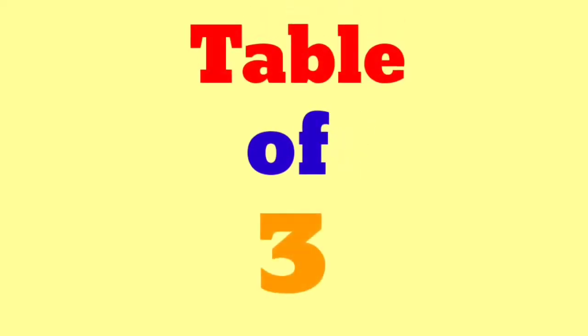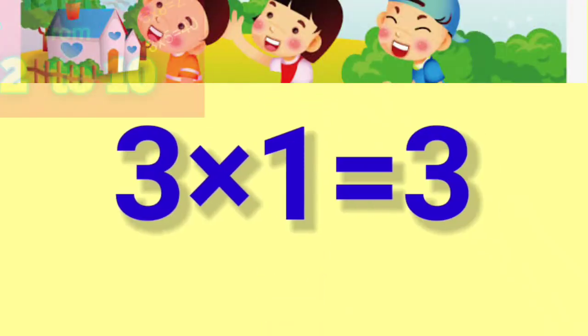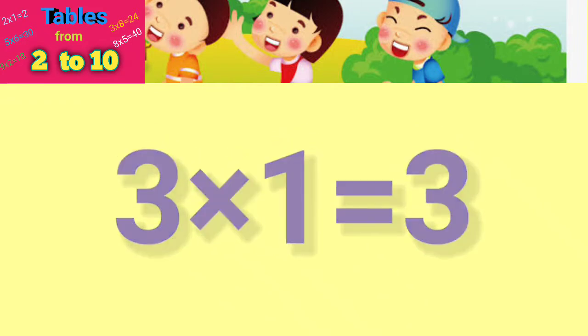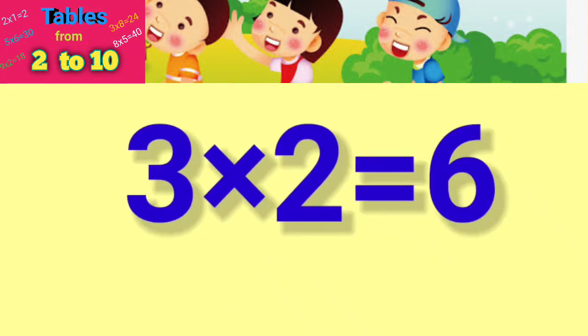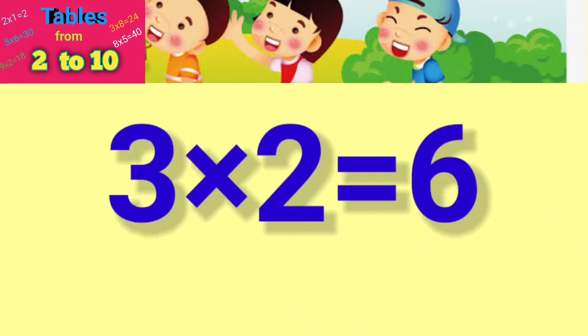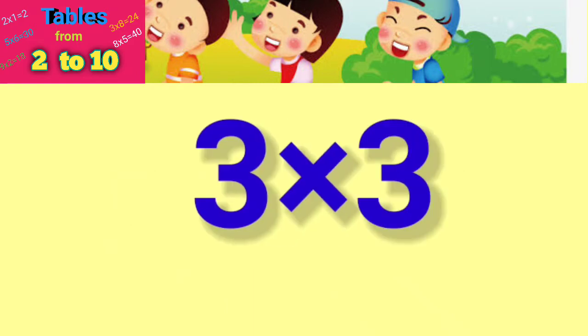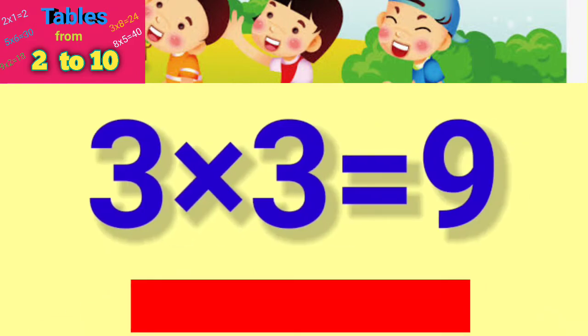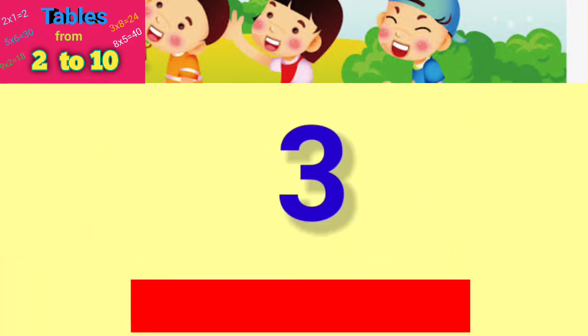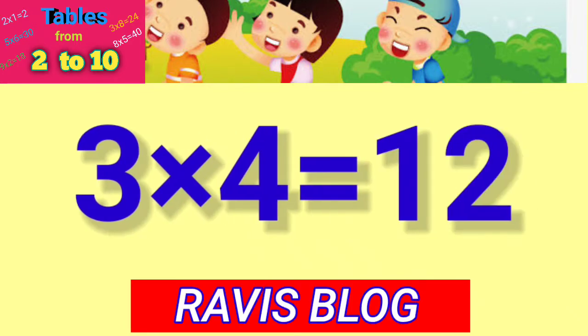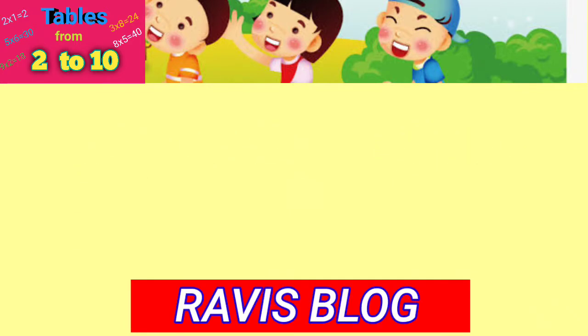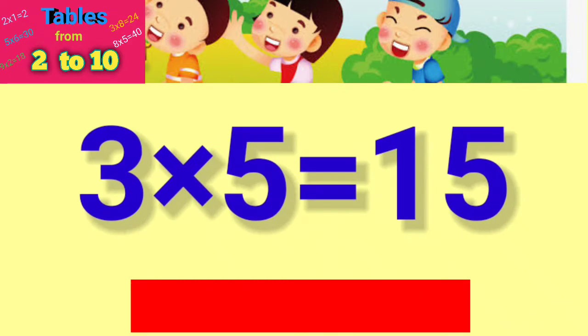Table of 3: 3×1=3, 3×2=6, 3×3=9, 3×4=12, 3×5=15.